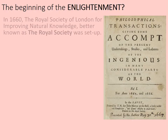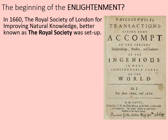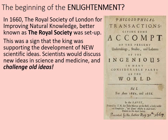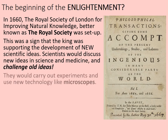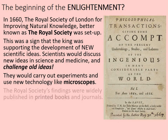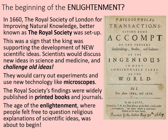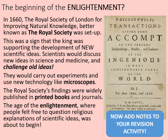What about the beginnings of the Enlightenment and the Royal Society? In 1660 the Royal Society of London for Improving Natural Knowledge was set up. This was a sign that the king supported new scientific ideas. Scientists would discuss and challenge old ideas in science and medicine. Increasingly in the Renaissance it was fashionable for rulers to support the sciences. The Royal Society carried out experiments and used new technology like microscopes. Its findings were widely published in printed books and journals. The Age of Enlightenment — where people felt free to question religious explanations — was about to begin.